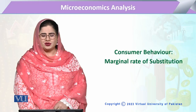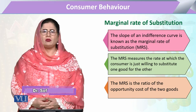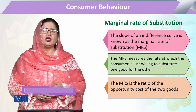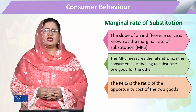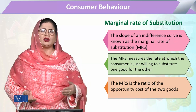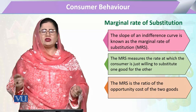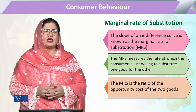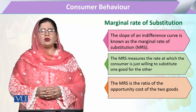Marginal rate of substitution is basically the rate at which the consumer is willing to substitute one good in lieu of the other. When the consumer faces a trade-off — how many units of one commodity they will sacrifice for a unit of another — and they are selecting various combinations in which they are indifferent, this trade-off defines the marginal rate of substitution.